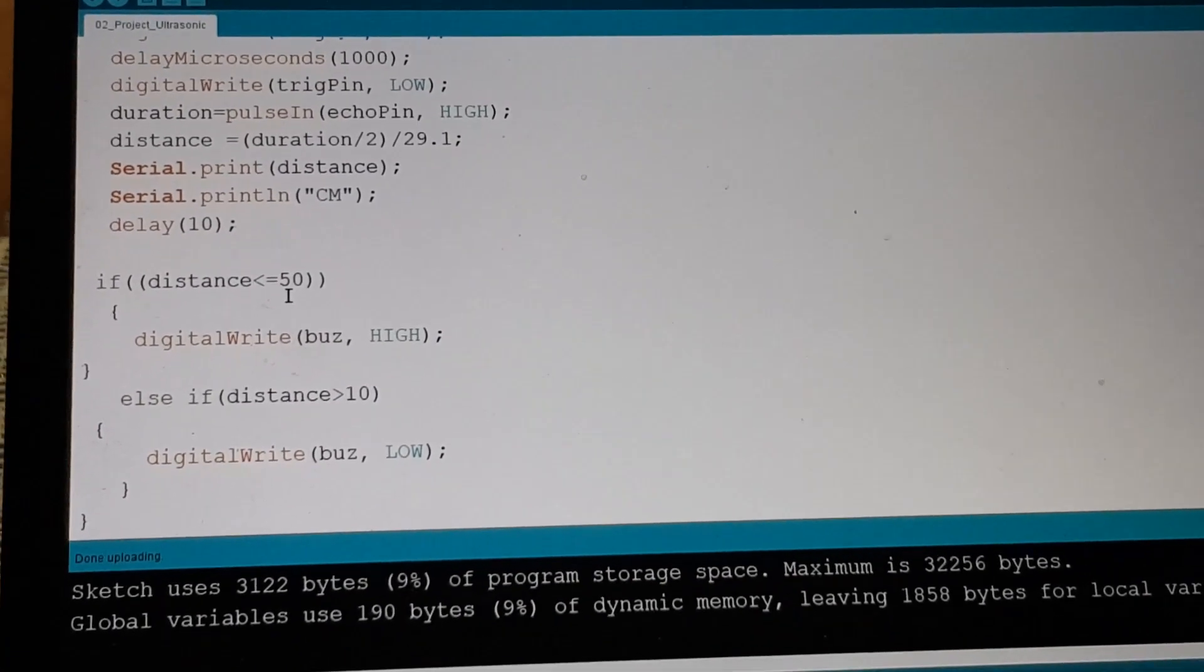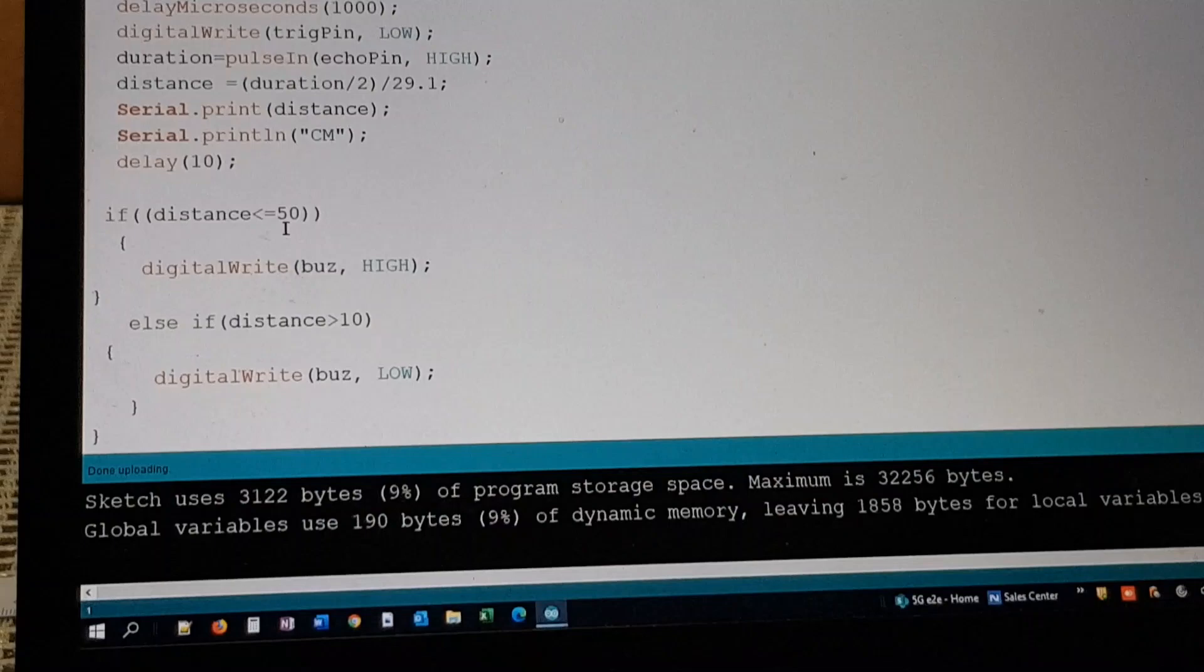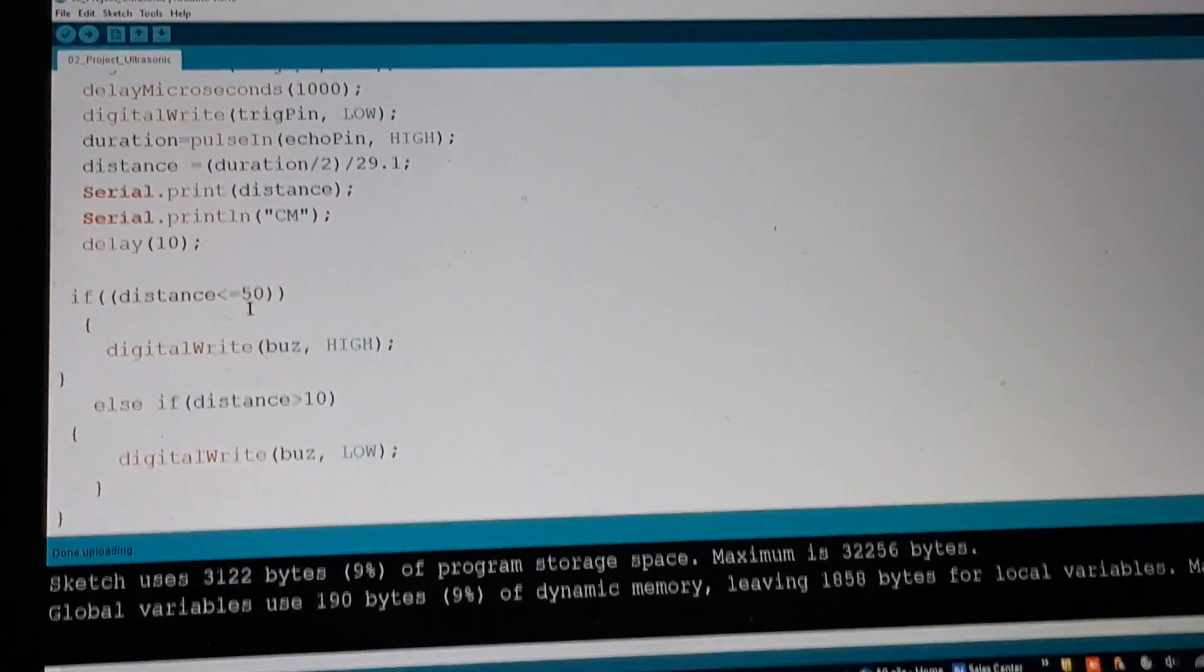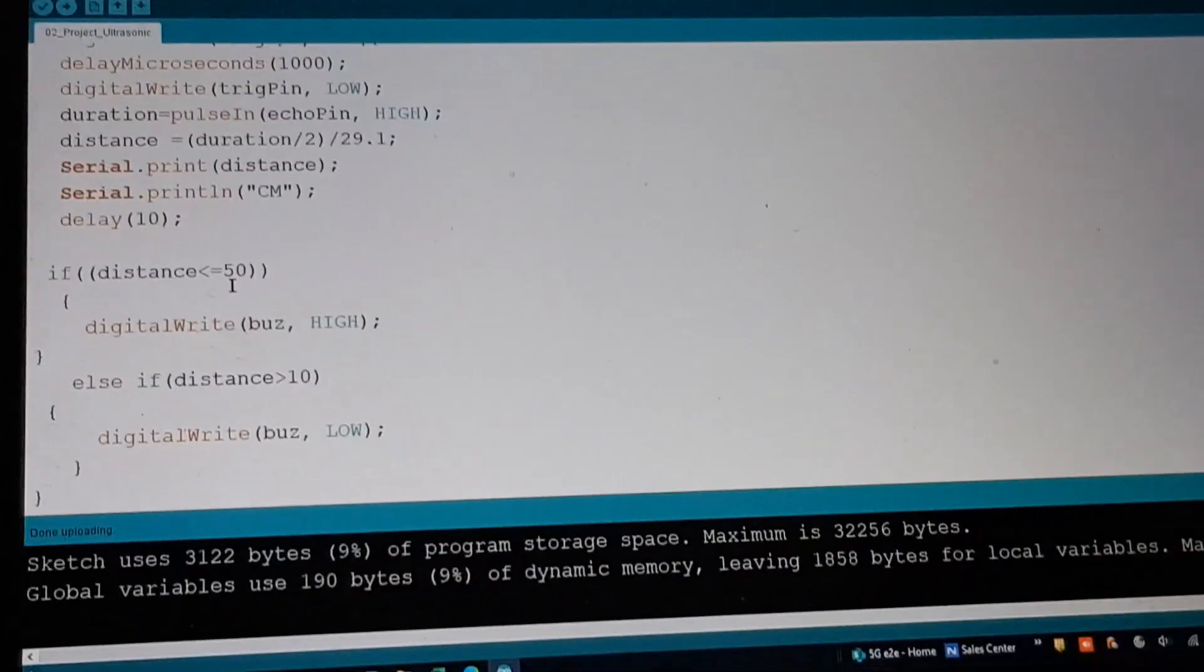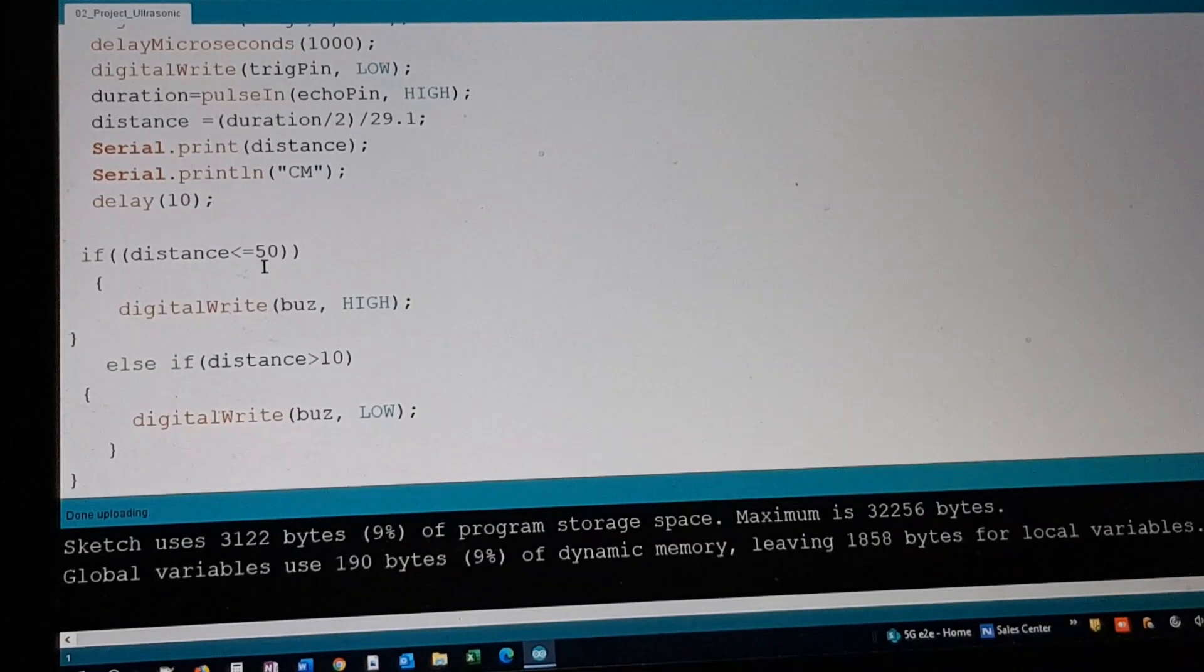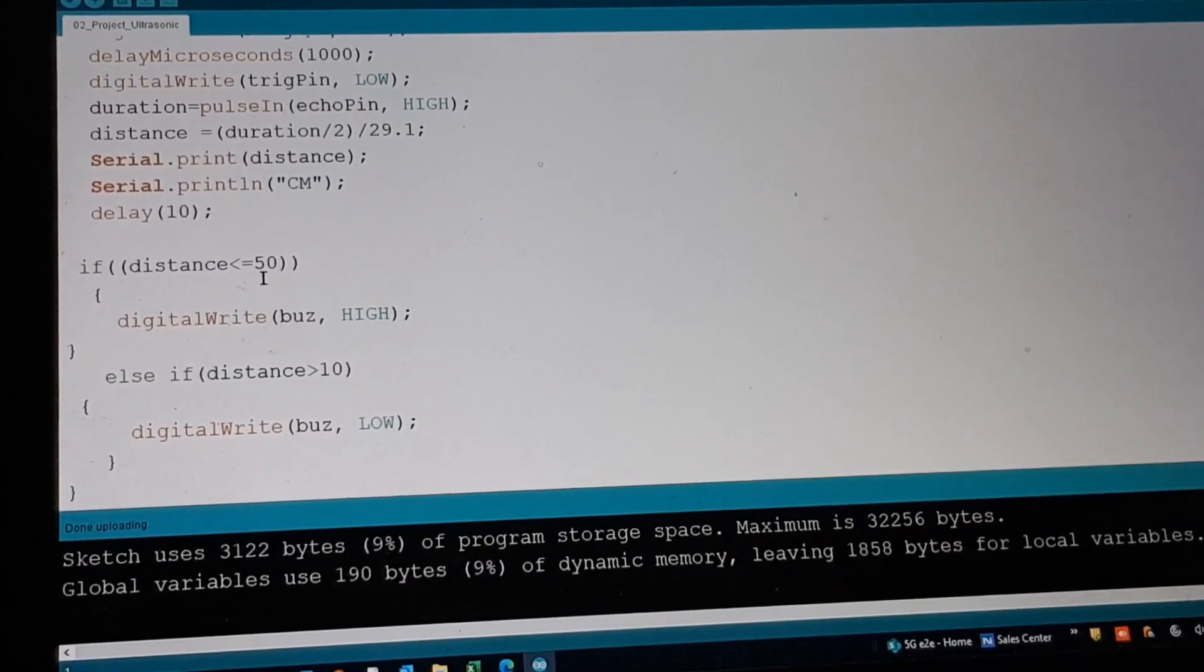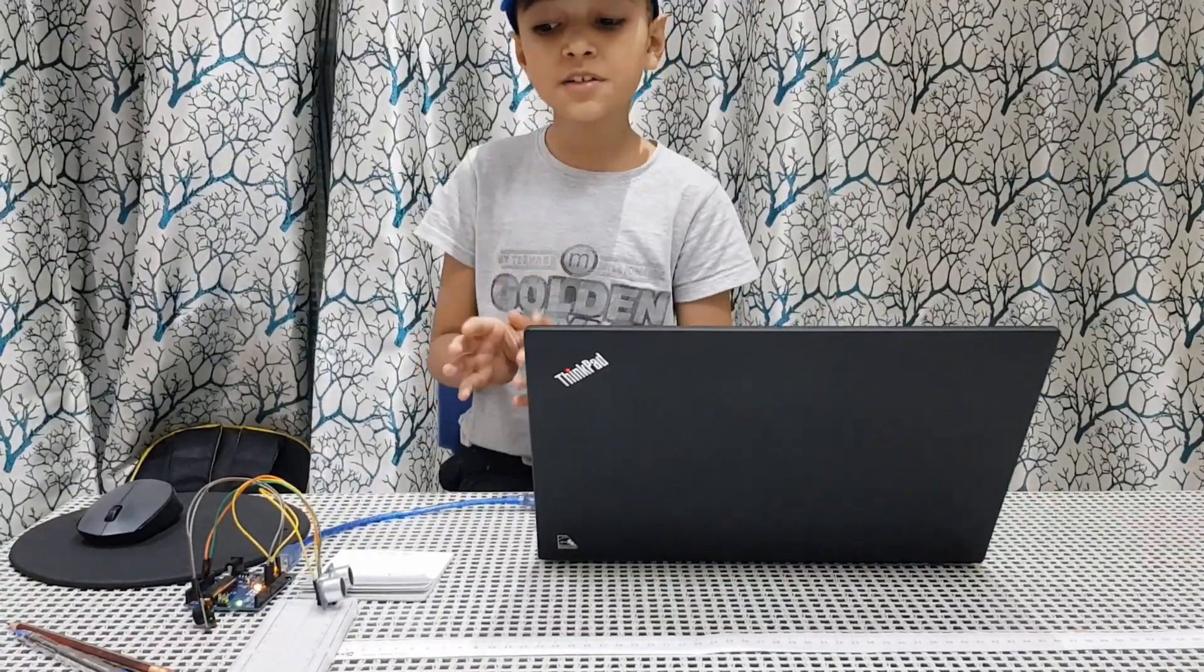So now if any object comes inside 15 centimeters, the ultrasonic sensor will send waves that will hit that object, then bounce back. Okay, so now let's give it a try.